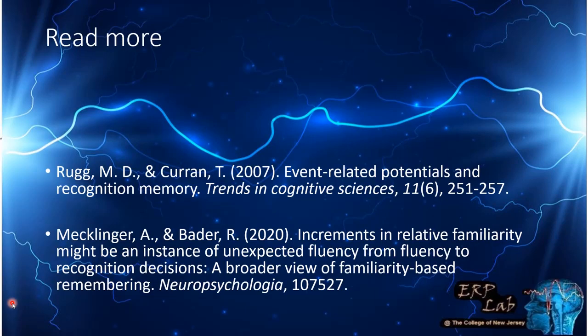So that's just a quick overview. I have another video for a deeper dive, and I'll put a link at the end of this video once it's done. The Rugg and Curran paper presents a lot of evidence linking the FN400 to familiarity and the LPC to recollection. Also look at the Mecklinger and Bader paper, which does an intensive analysis of FN400 information and provides some complexity surrounding that ERP component. Thanks for watching.